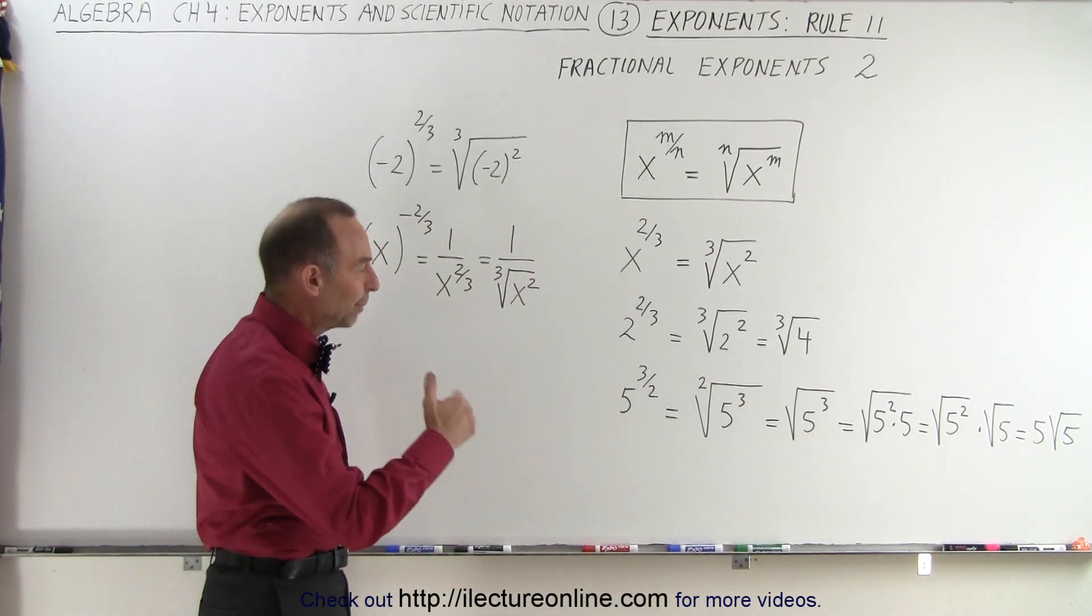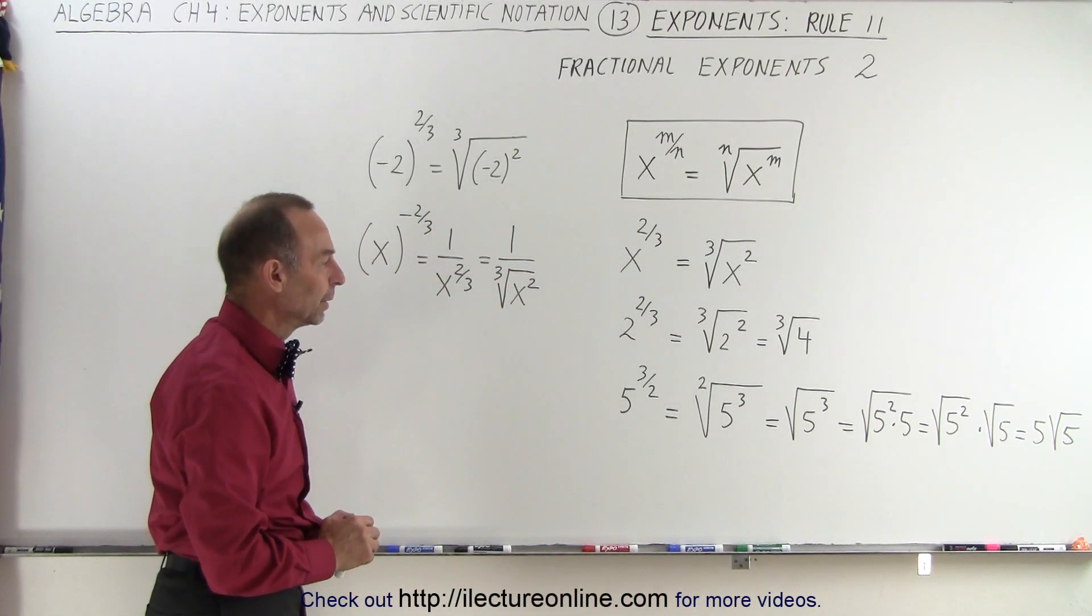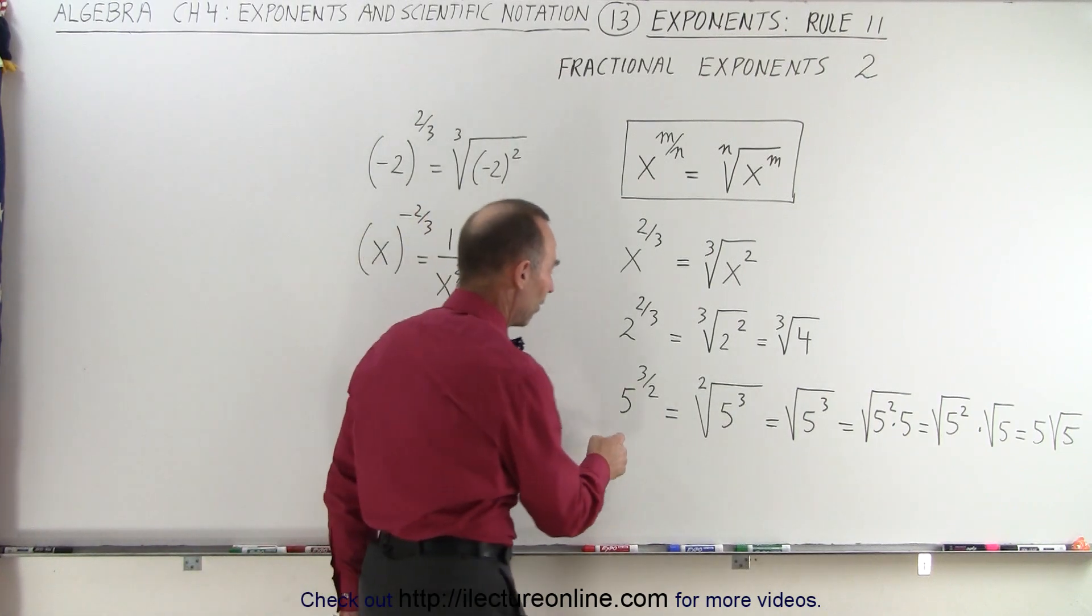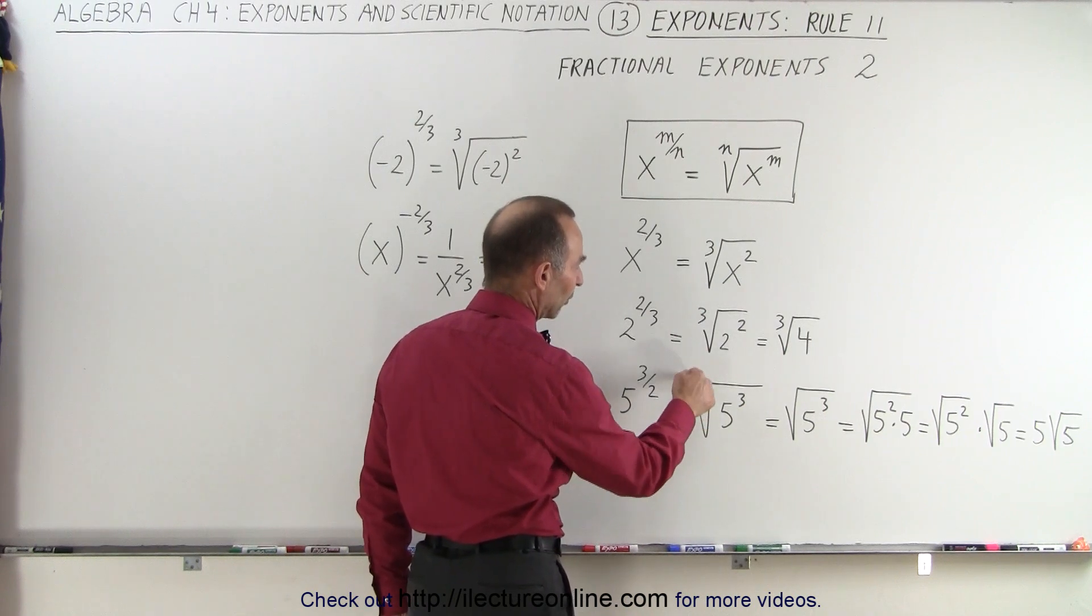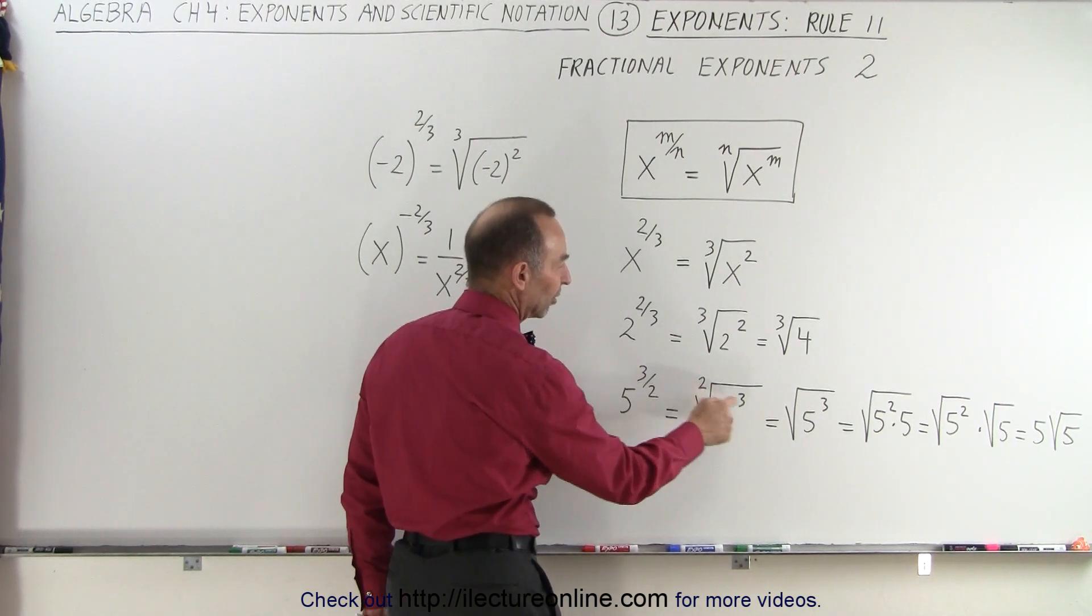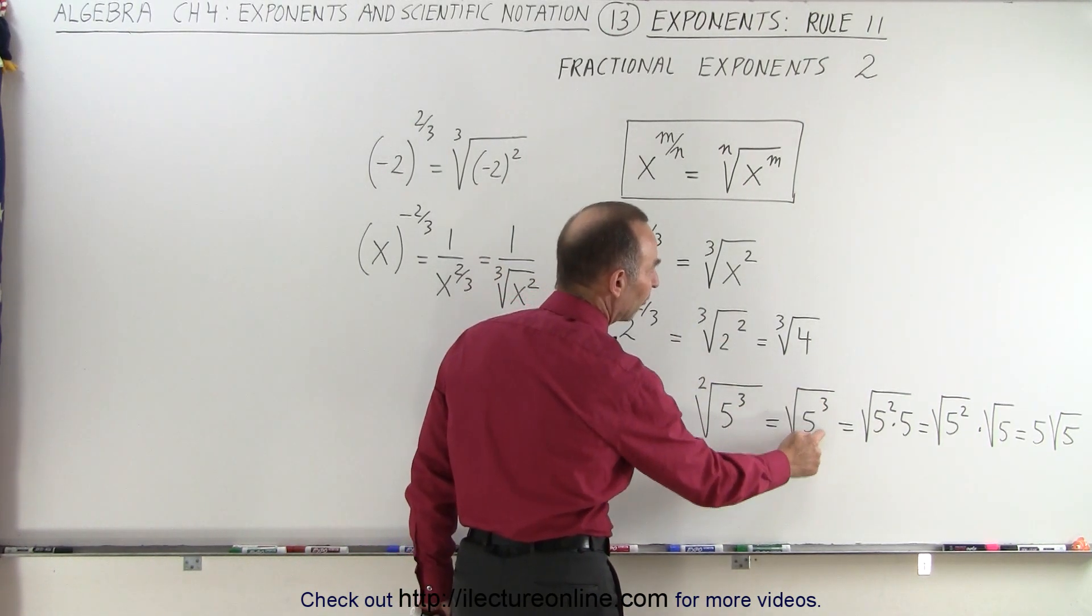Now what if the number in the numerator is bigger than the number in the denominator? Well then we have something like this: 5 to the 3/2 power is equal to the square root of 5 cubed. Of course we don't have to write the little 2 there, we can simply write it as the square root of 5 cubed.